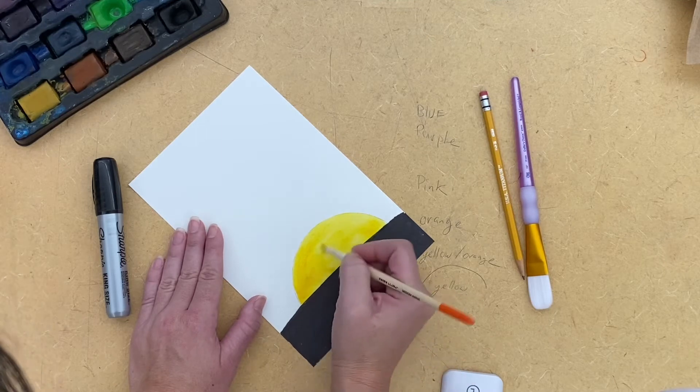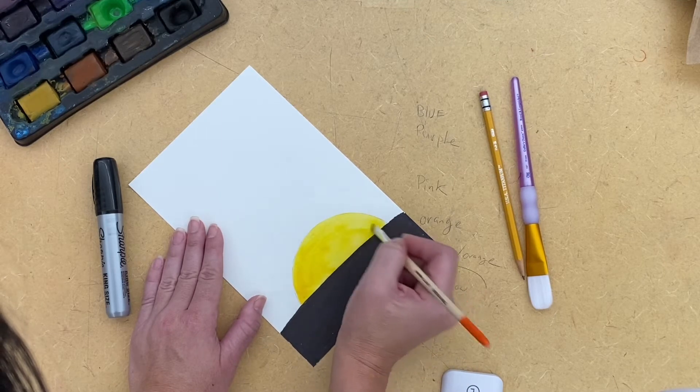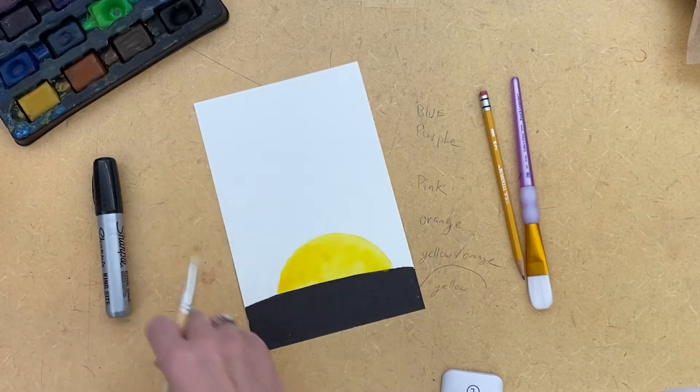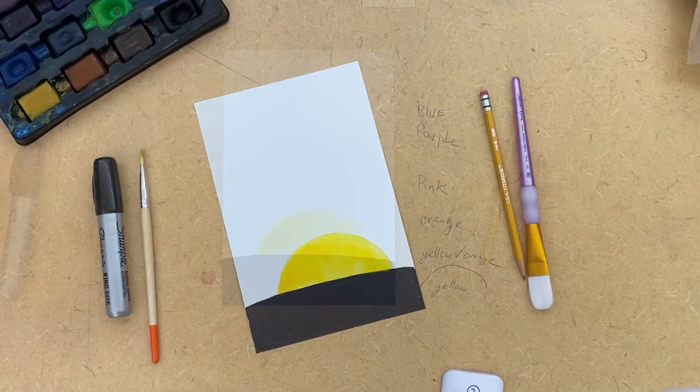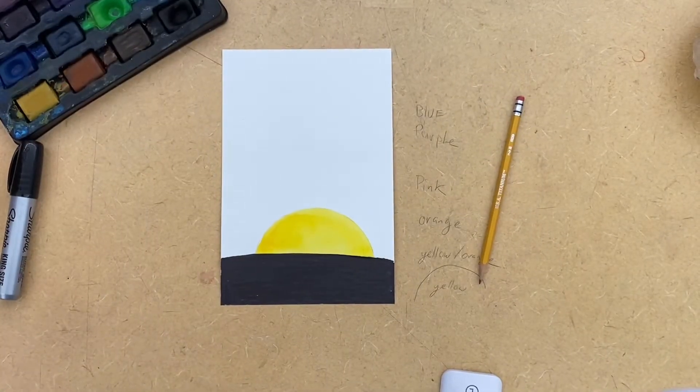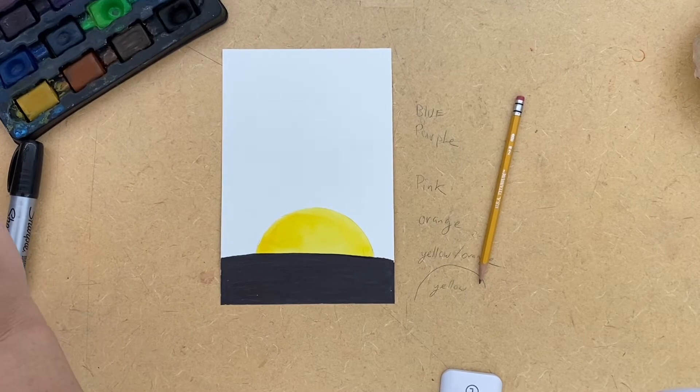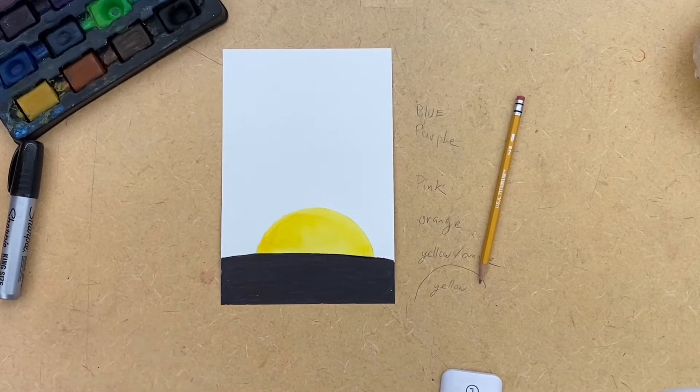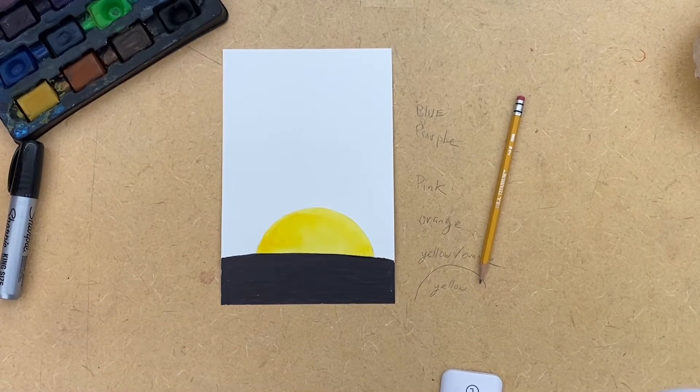Alright, now I'm going to pause the video and I'm going to blow dry the painting so that way it doesn't mix colors. The next step, you're going to want to cover your background with water and try to do that very quickly so it doesn't dry.